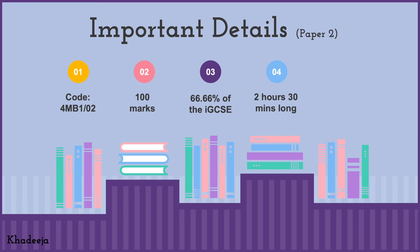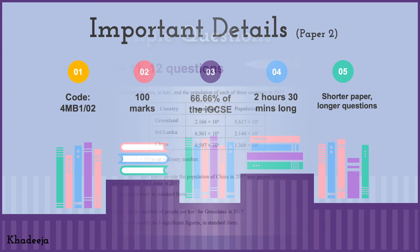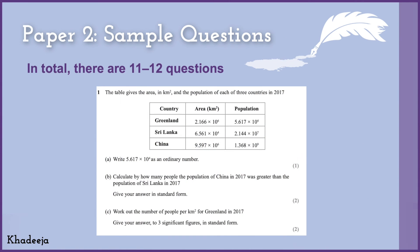Paper Two is two hours and 30 minutes long — about one hour more than Paper One. You have good time, but the questions are longer. It's a shorter paper in terms of number of questions, and you have more time, but the questions themselves are more involved.